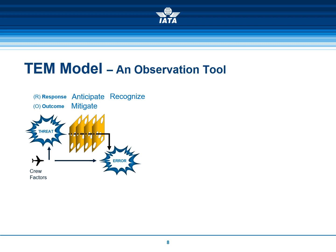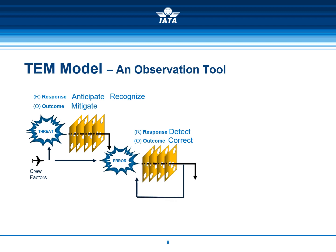Once an error is made, the best response is to detect this error, and the best outcome is to correct it. However, the error might not be detected or may be only partially detected, and the outcome could also be a partial correction which could lead to a new error. If the situation worsens, the outcome could lead to a UAS.